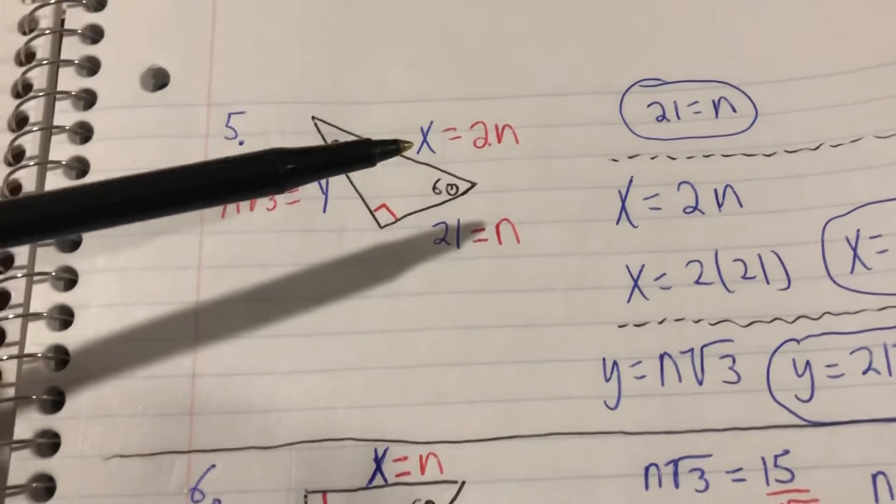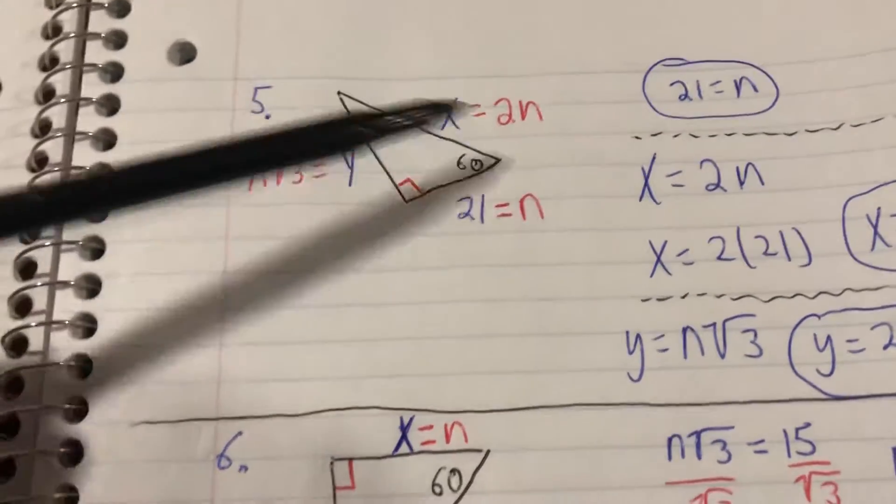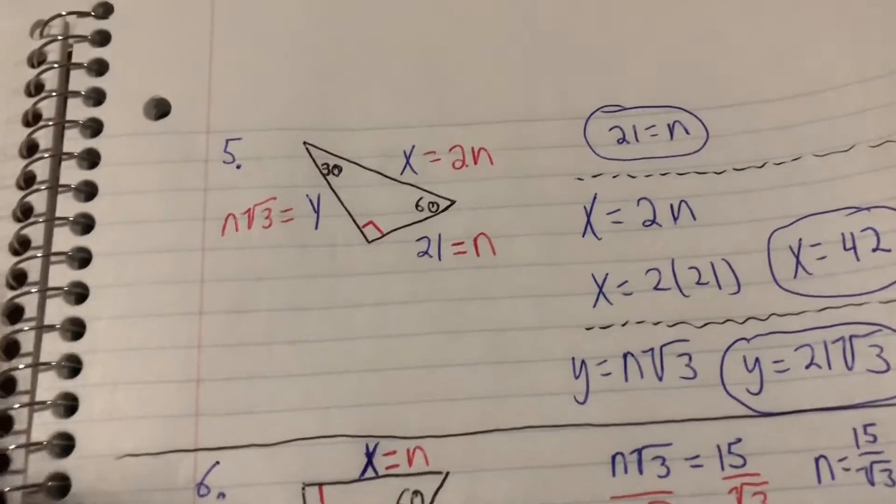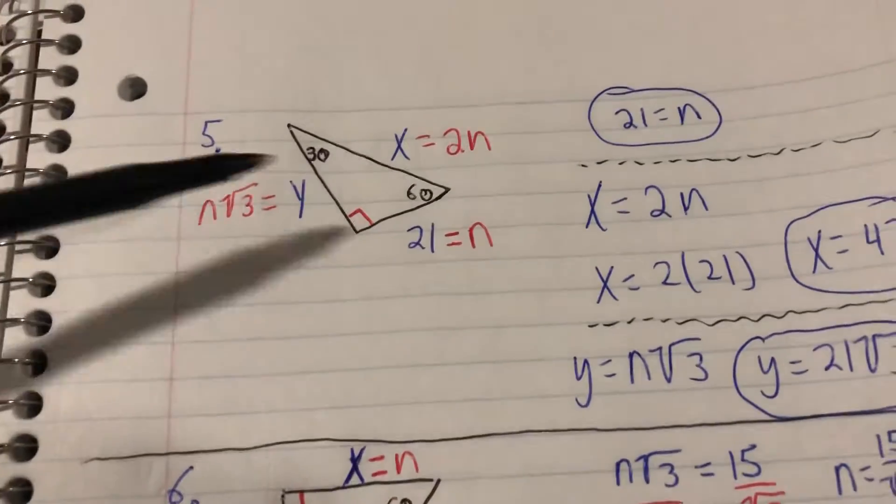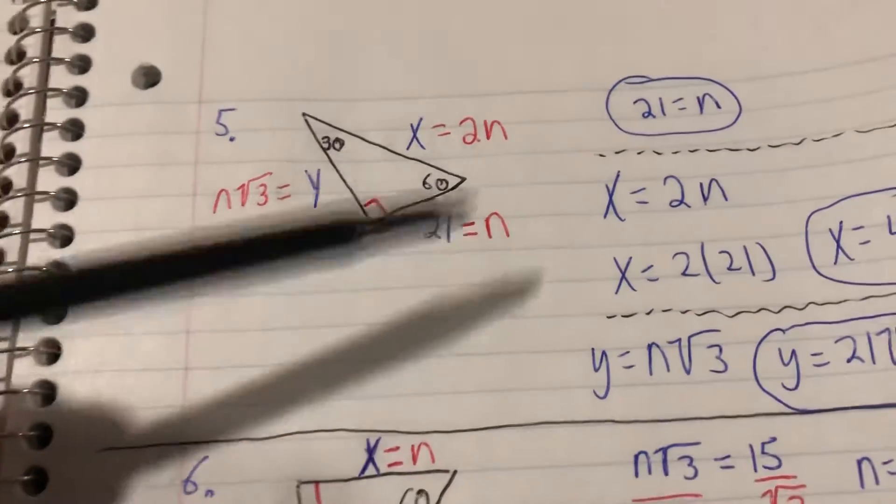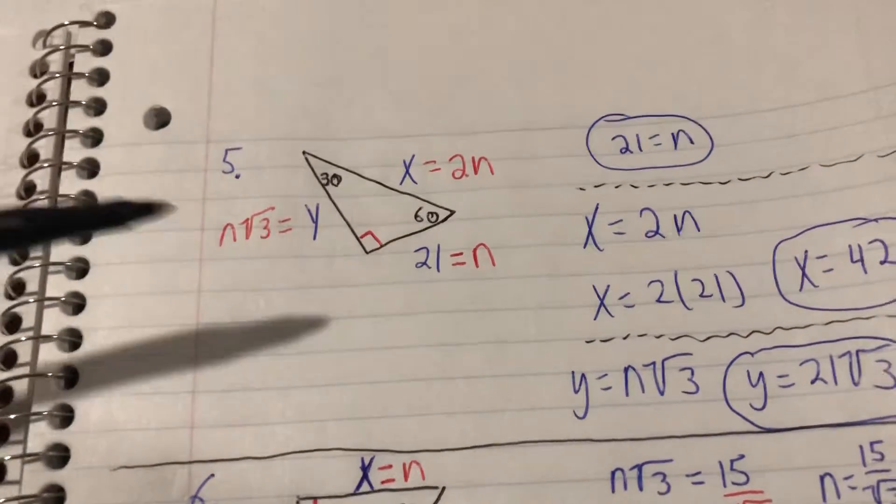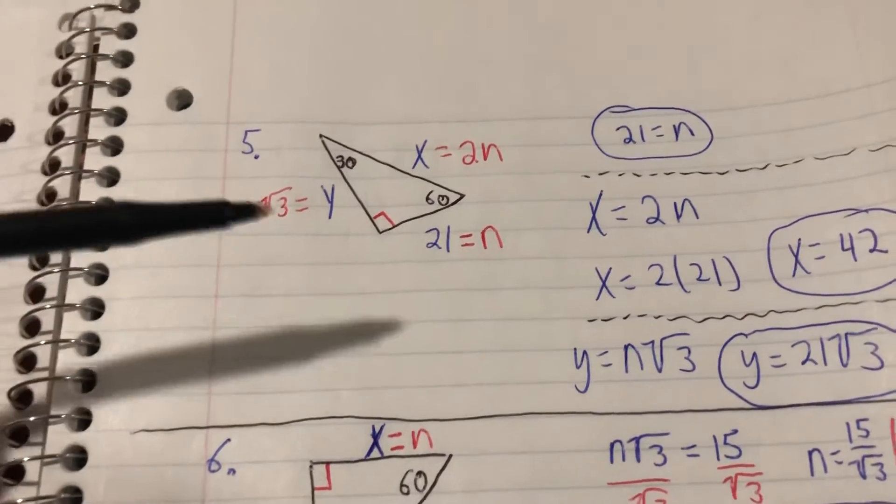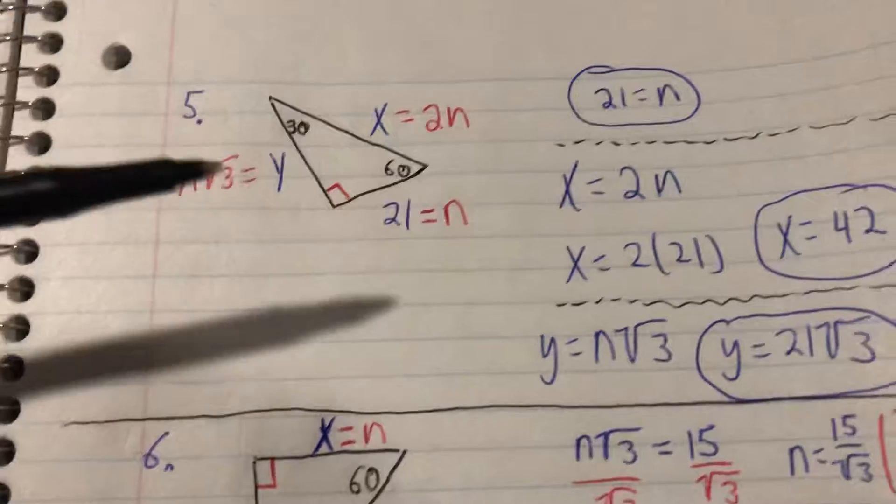Remember, for a variable you can use whatever you want. You can put a star there instead of n if you want, shamrock, whatever you want—it does not matter. I'm gonna use n though.